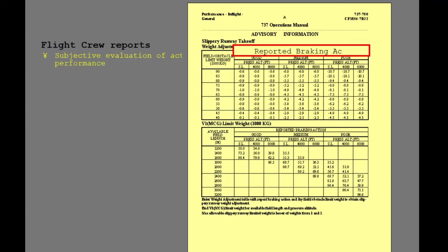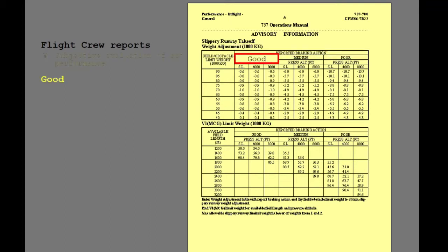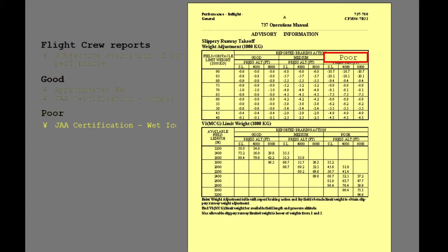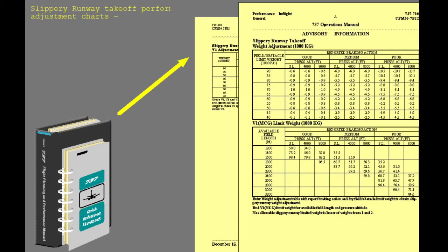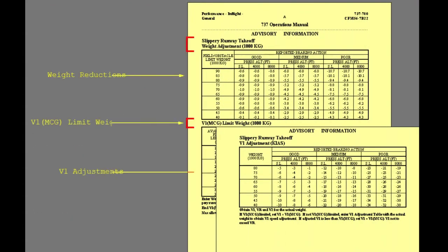This reported braking action is based upon subjective evaluation of actual braking performance as reported by flight crews. Good is a performance level comparable to a wet runway and has also been used in JAA certifications for compact snow. Poor is a performance level used in JAA certifications for wet melting ice. Boeing does not correlate the airplane's performance to the runway friction measured by runway friction measuring vehicles. The use of this slippery runway data is the same whether the data comes from the operations manual performance in-flight section or the flight planning and performance manual.